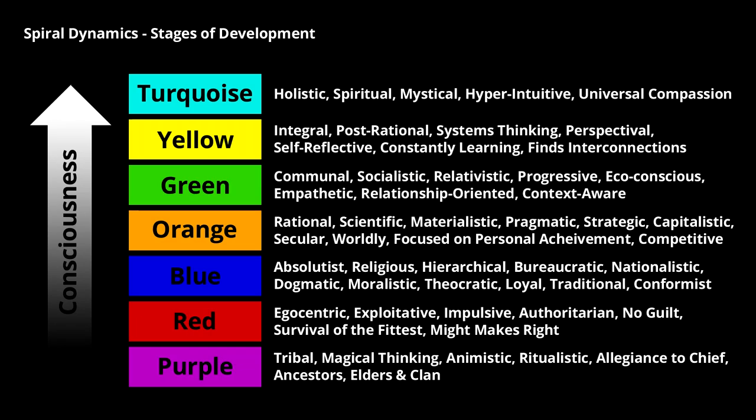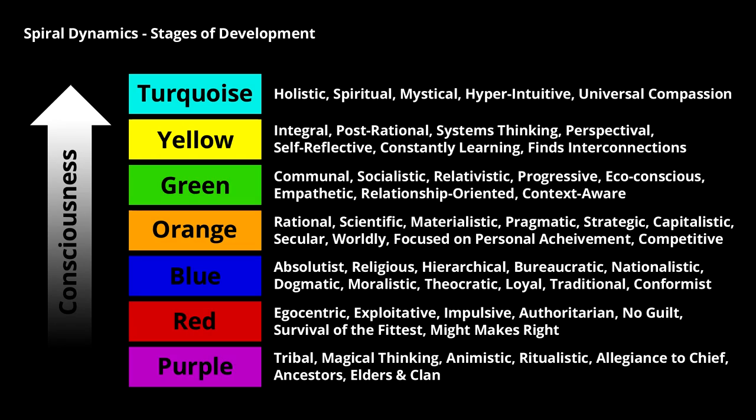Just to refresh your memory: Spiral Dynamics is a series of stages that humans evolved through both individually and collectively. As society and culture evolve through these stages, it goes from beige to purple to red — which we'll be talking about now — then to blue, orange, green, yellow, and turquoise. So now we're starting to talk about the lower stages.